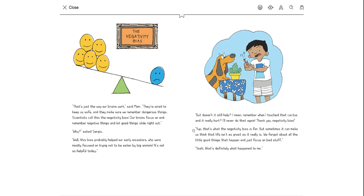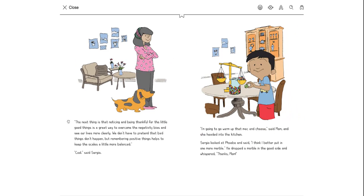Yup. That's what the negativity bias is for. But sometimes it can make us think that life isn't as great as it really is. We forget about all the little things that happen to us and focus on the bad stuff. Yeah, that's definitely what happened to me. The neat thing is that noticing and being thankful for the little things is a great way to overcome the negativity bias and see our lives more clearly. We don't have to pretend that the bad things don't happen, but remember positive things helps us keep the scale a little more balanced.